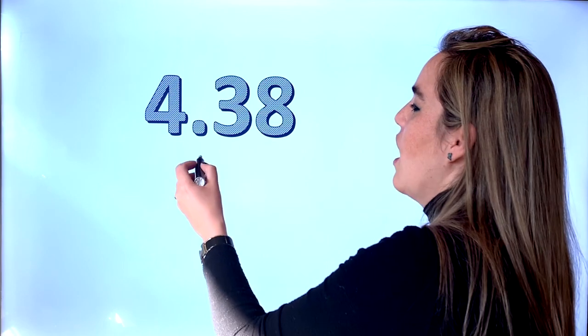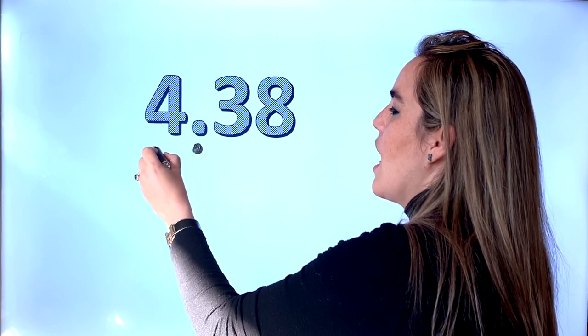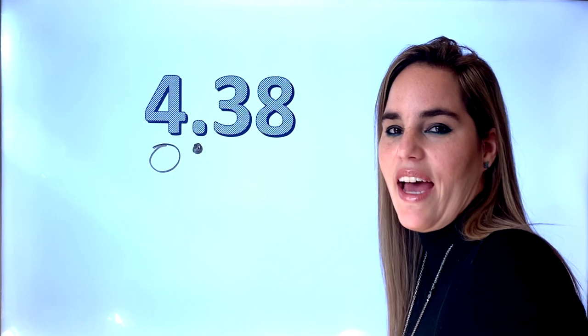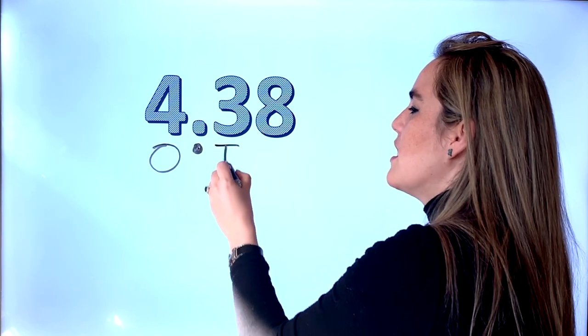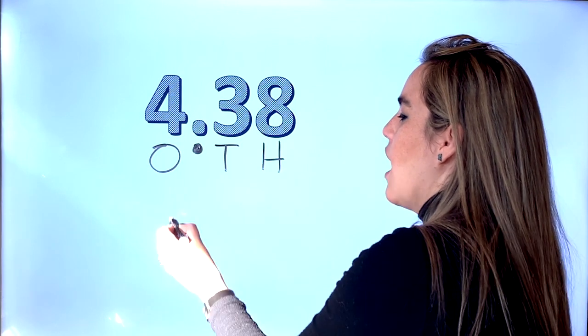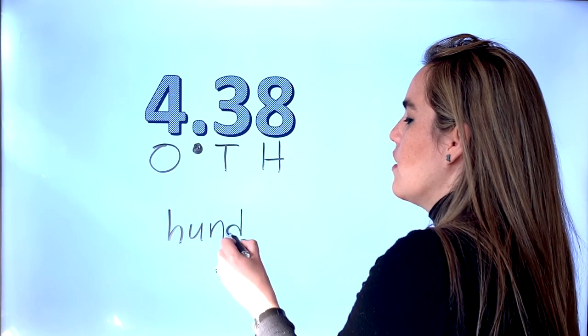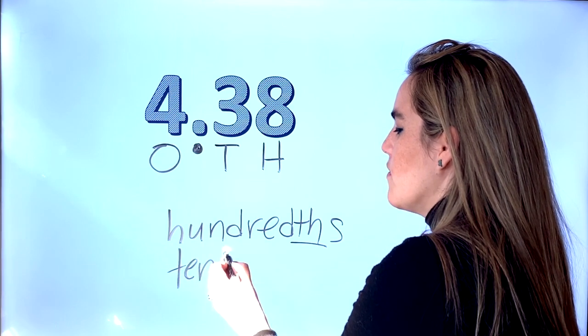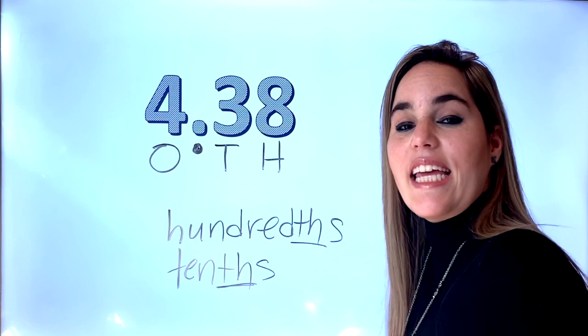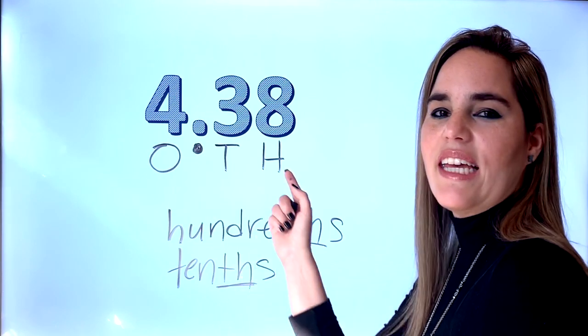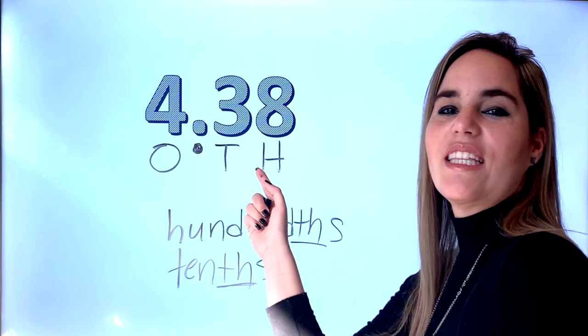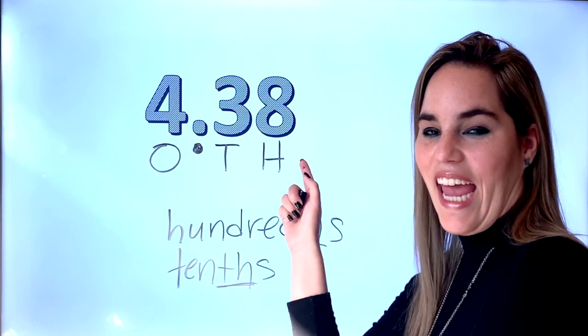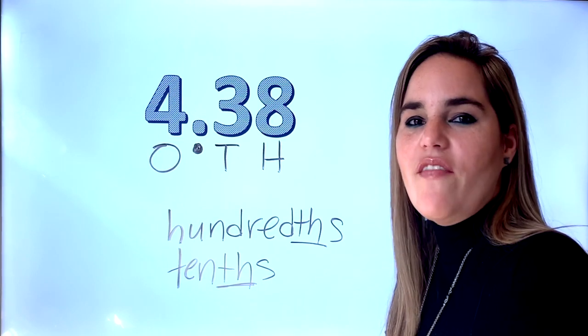The first thing you need to do with decimals is your place value chart. I'm going to write a decimal point — these are my ones. On the right side we have the tenths and the hundredths. Decimals have the letters T-H. Say it with me: decimal T-H. Now let's find out the value of each one of the digits.